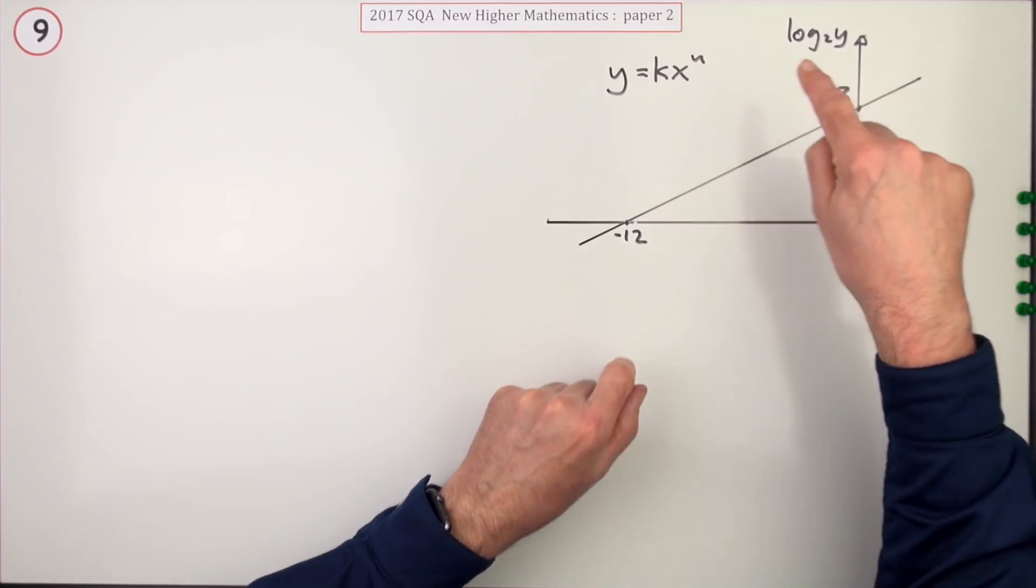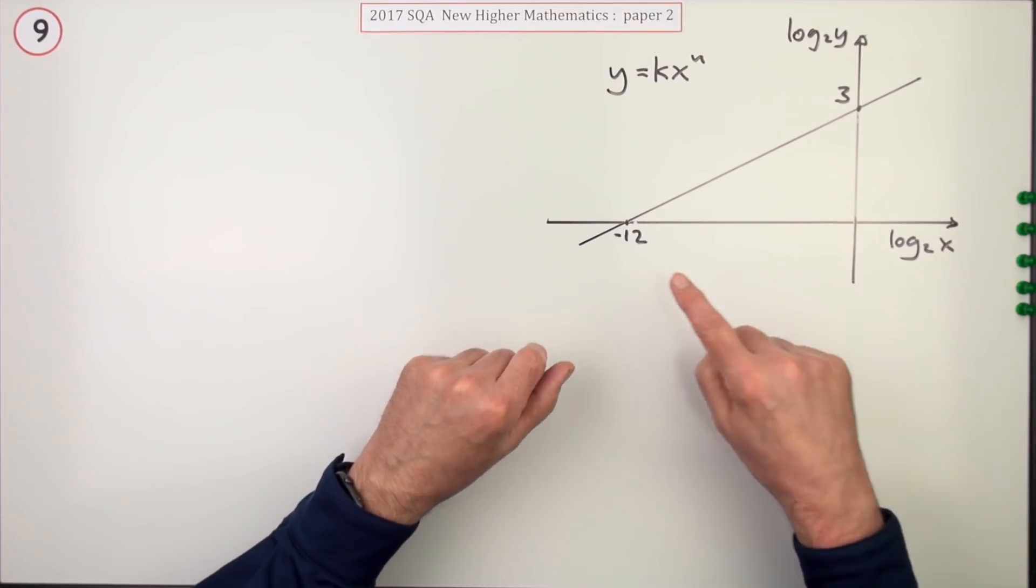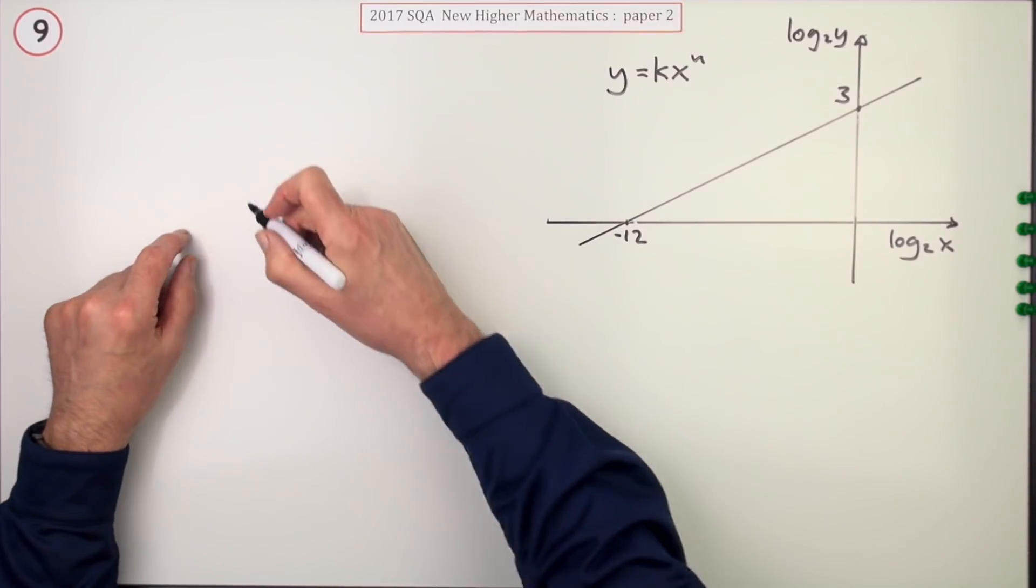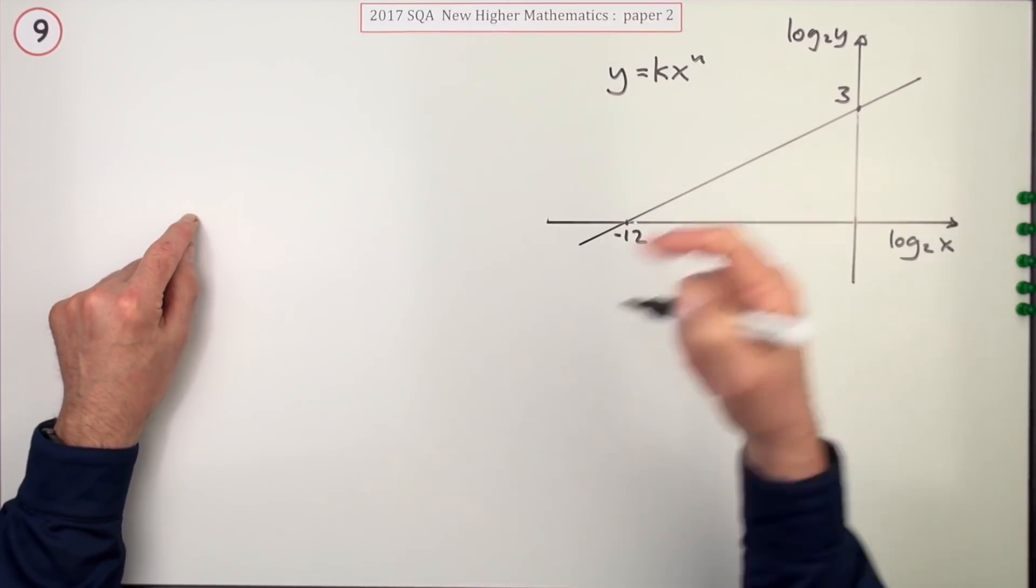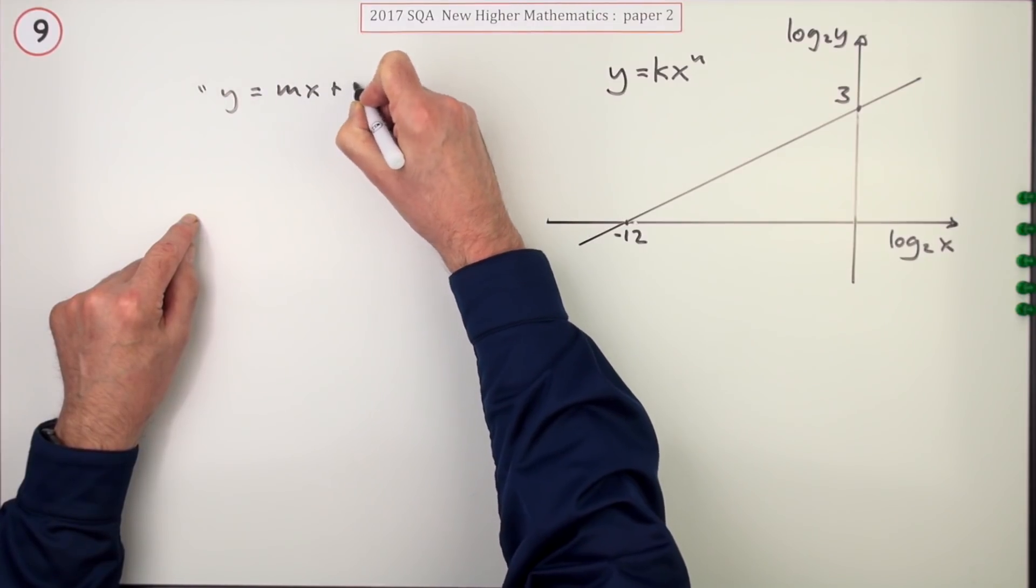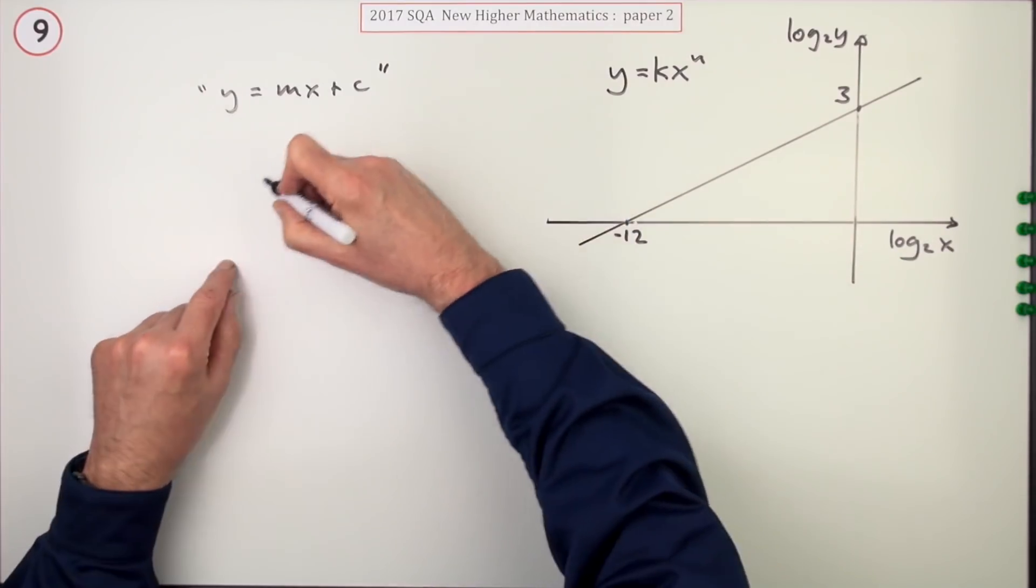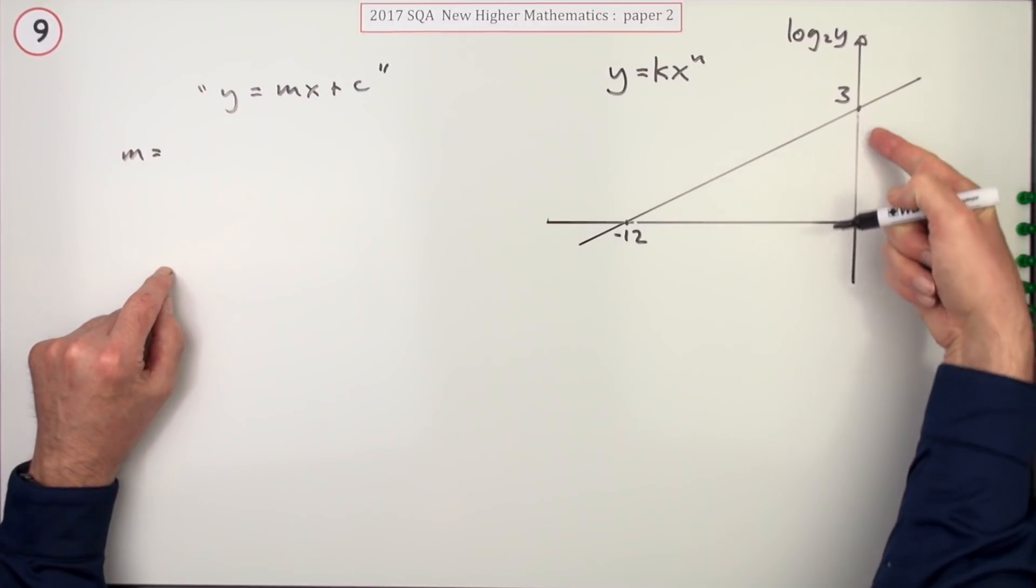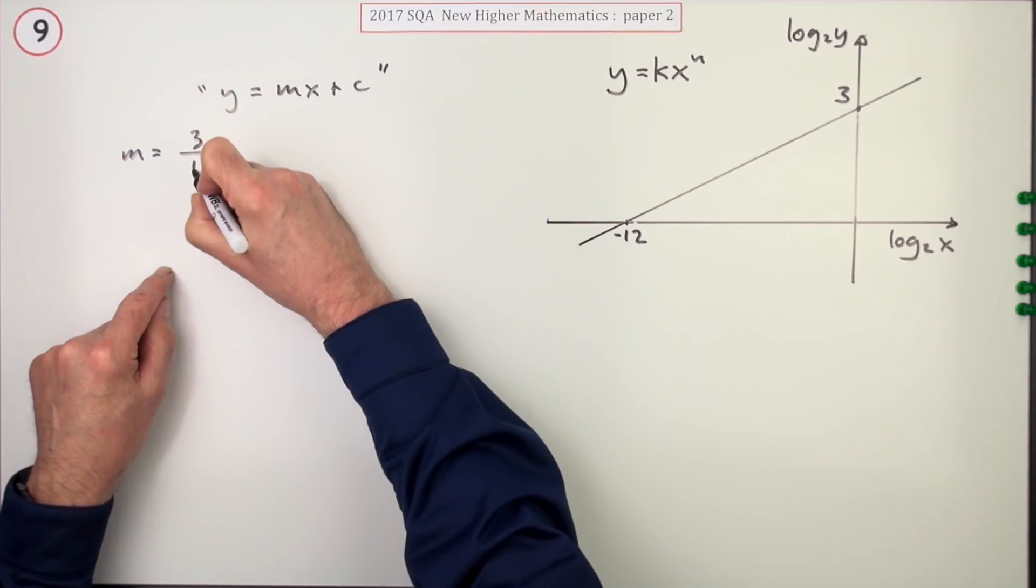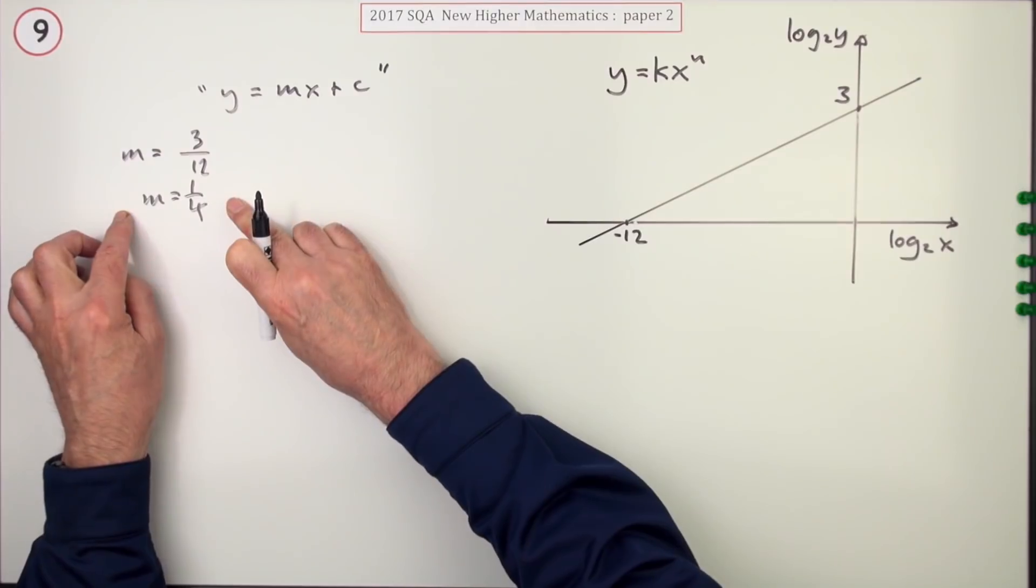The first way would probably be you see a line, so what is the equation of that line? Well you know where it cuts the vertical axis, so it's going to be of the form Y equals MX plus C. What's the gradient? You'd work that out separately, so the gradient will be the distance up over the distance along, which is a positive 12, so the gradient is a quarter.